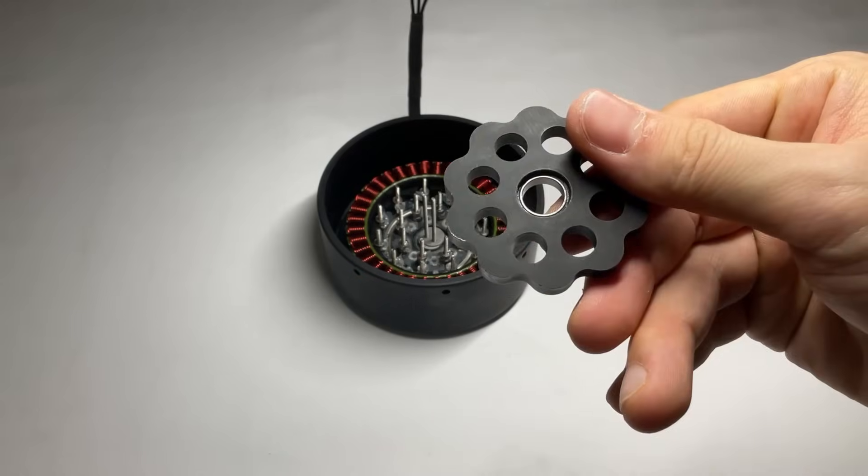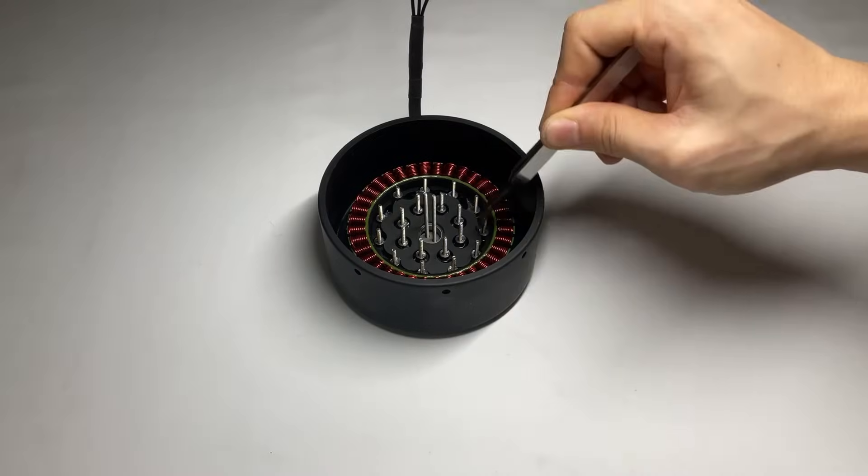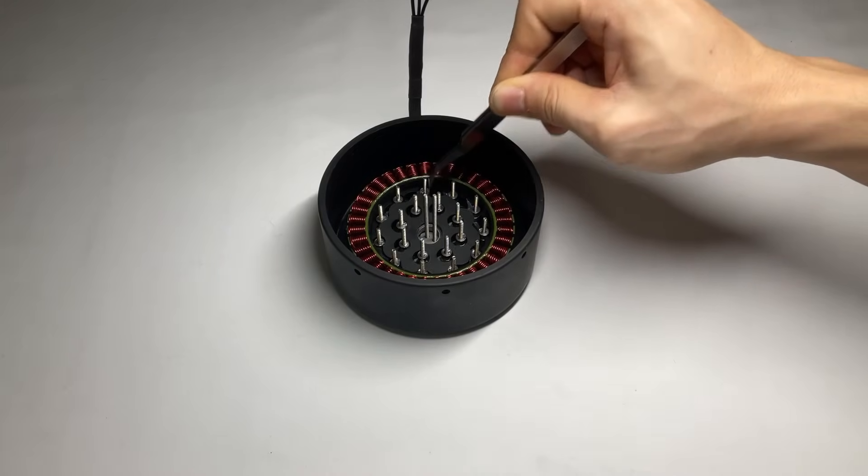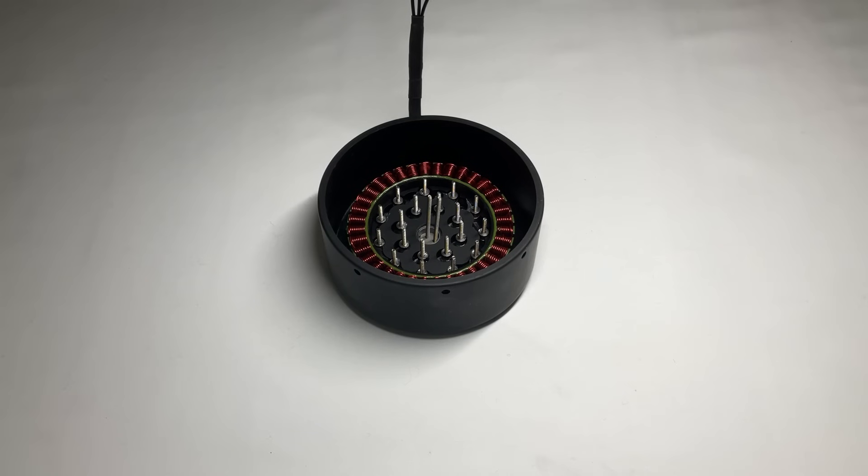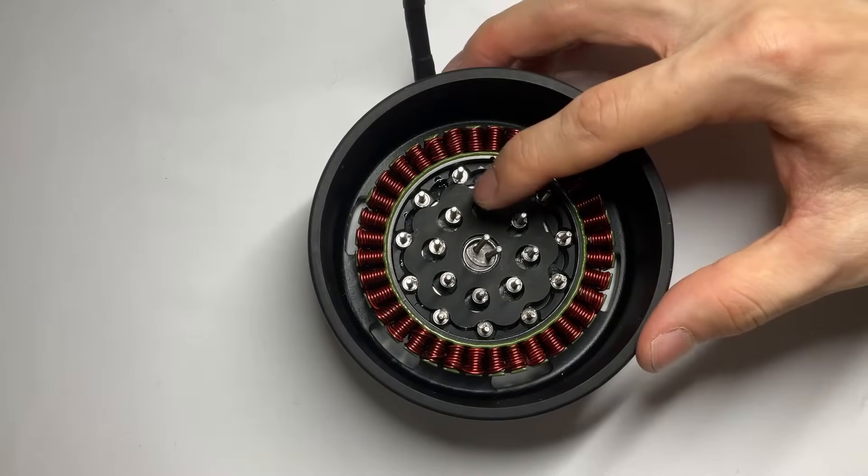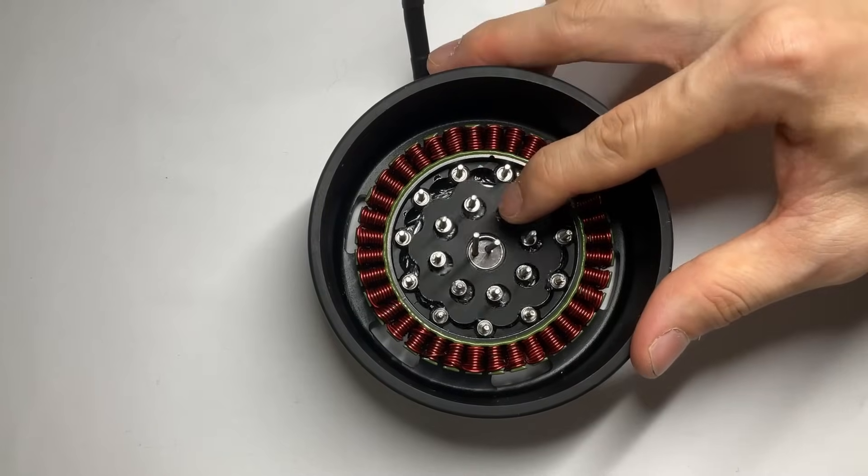Now, I'll insert the cycloidal disc. By the way, the reduction ratio is 10. When a 10 to 1 ratio is used, the number of outer pins is 11, which is one more than the ratio itself. If you turn the output screw, you'll notice it rotates smoothly with an eccentric motion.